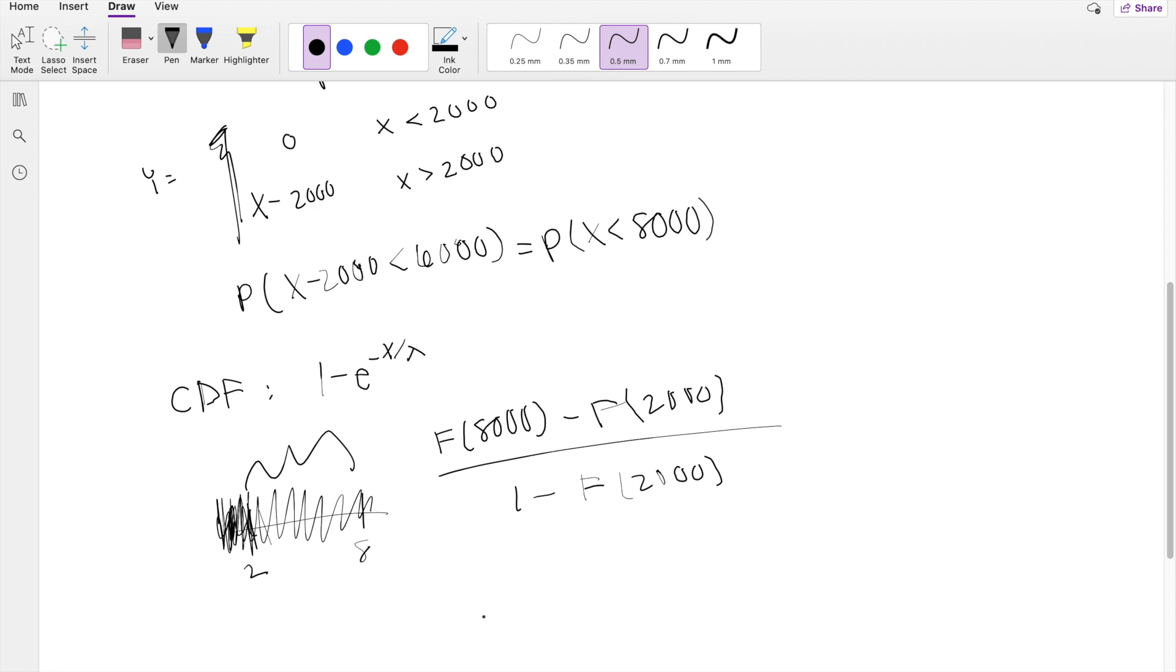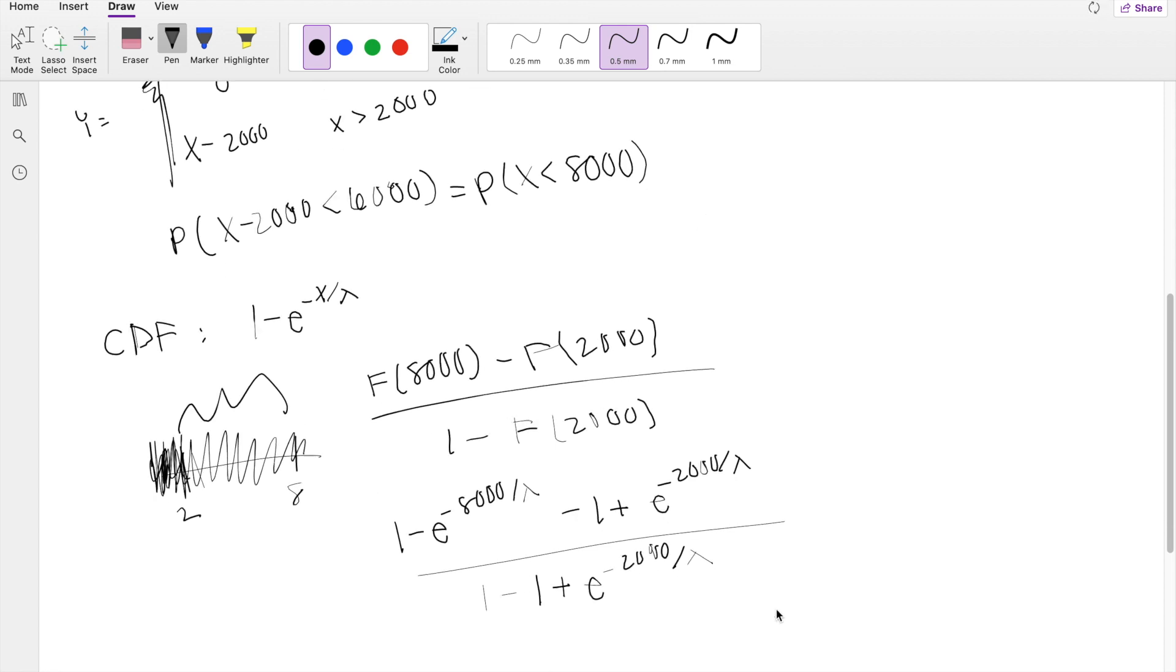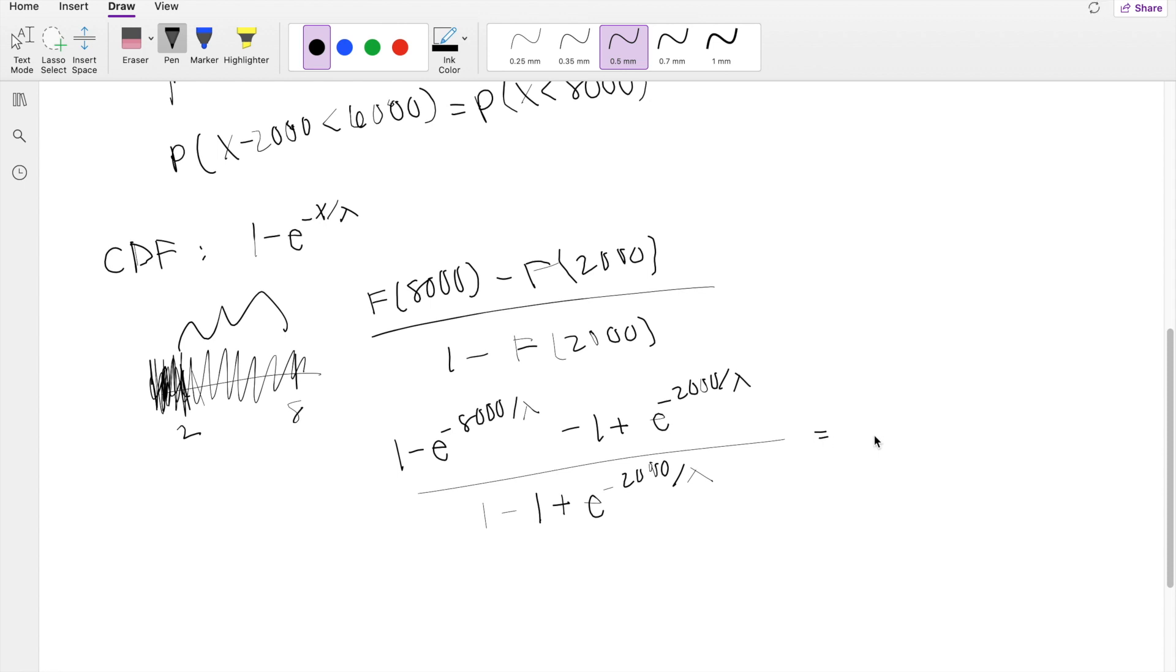If we know that CDF for any function is 1 minus, right here we wrote it out. So by using our CDF formula, this is going to be equal to 1 minus e to the negative 8,000 over lambda minus 1 plus e to the negative 2,000 divided by lambda equals 0.5.